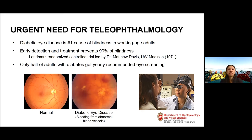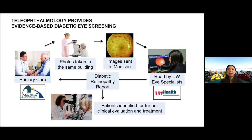Teleophthalmology is a more efficient, convenient, and effective way to get people screened. It's an evidence-based form of diabetic eye screening well validated in the VA health system and implemented nationwide in England, where for the first time in 50 years diabetes is no longer the leading cause of blindness. With our partners at Mile Bluff Medical Center, a patient seeing their primary care provider for a regular checkup can be identified as due for diabetic eye screening; photos are taken in the same building at the same visit in under 10 minutes using a camera with autofocus and auto-capture, then sent securely to specialists, and a report returned to the patient and provider within a few days.